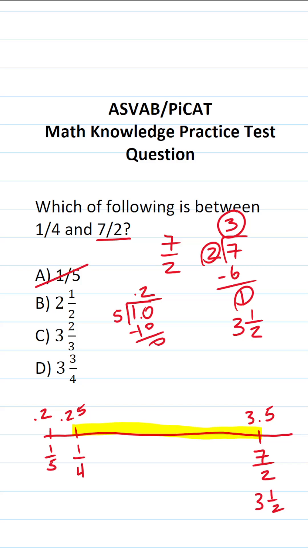What about 3 and 3/4? You should know that 3/4 is the same thing as 0.75. So this is 3.75, which is bigger than 3.5. So we have 3.75 over here. You can see that that does not fall between 1/4 and 7/2.